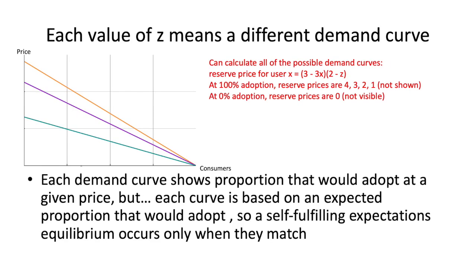Here we show all the possible demand curves. The formula for each demand curve is shown, and you can calculate it based on different proportions. If you plug in 100% for z and then each user number, you get different reserve prices for each user — basically a separate demand curve at each expected proportion. The 100% adoption curves would be at four, three, two, and one. The 0% adoption would be the flat line at zero. The curves shown are at 25%, 50%, and 75% proportions.